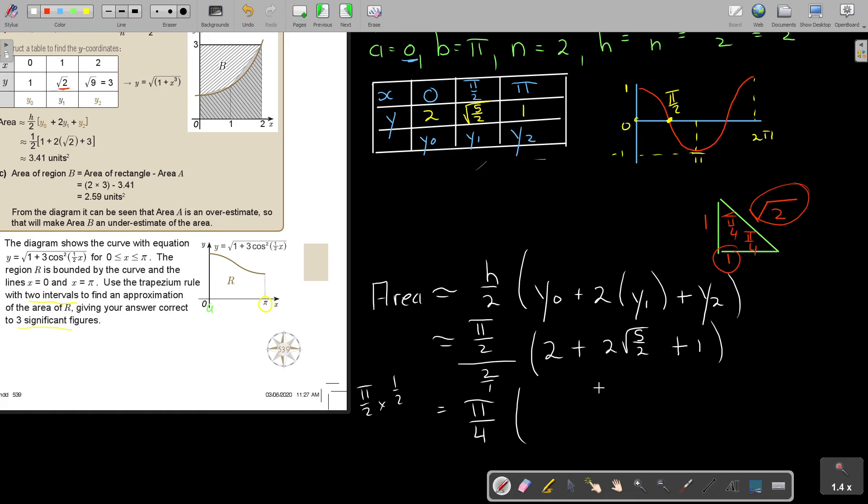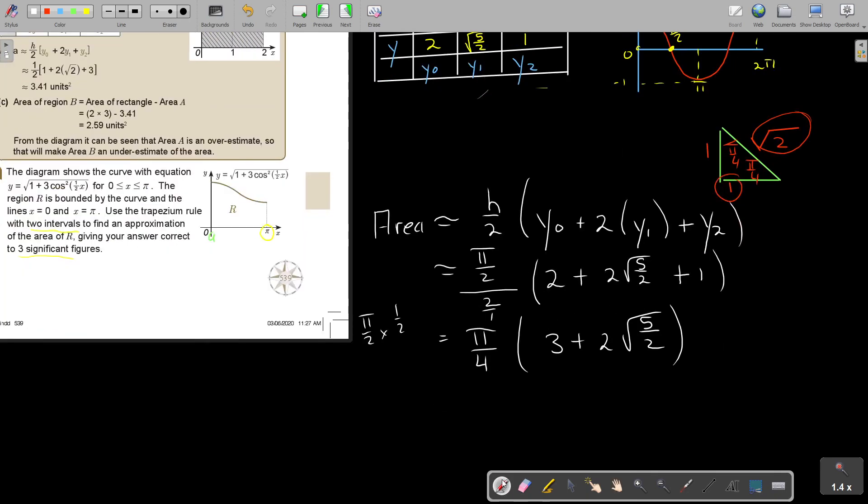I think take a calculator and start pressing everything on the calculator. So I will start with the bracket first. So I will say 3 plus 2 multiply square root bracket 5 divided 2, close the bracket. Multiply, shift pi, divide 4, equals. You can press it anyway, you know your calculator, and just press it nice. And then, correct to 3 significant figures, it's 4.84 units squared.